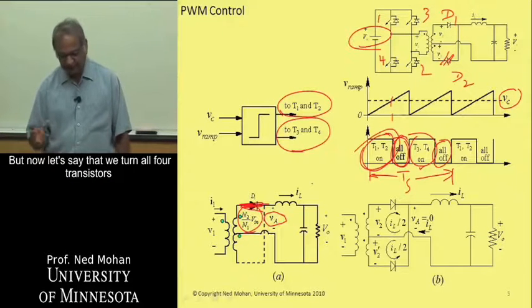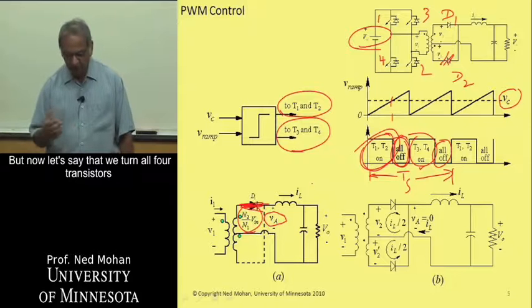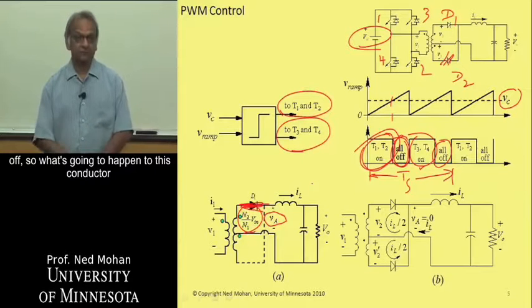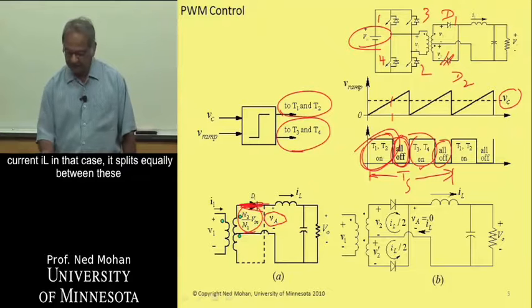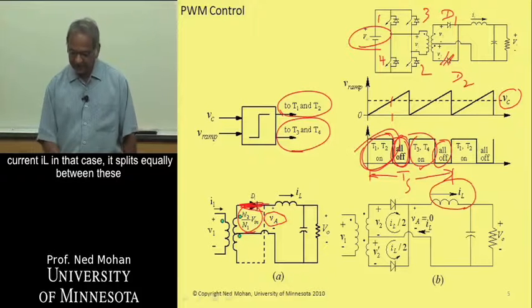So that's what is happening when T1 and T2 are on. But now let's say that we turn all four transistors off. So what's going to happen to this inductor current IL?